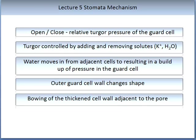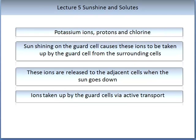Water moves in from adjacent cells, resulting in a build-up of pressure in the guard cell, causing a change of shape to the outer guard cell wall. The bowing of the thickened cell wall adjacent to the pore results in a change in structure. There are three solutes involved in active transport: potassium ions, protons, and chlorine. The protons are obtained from water. Sunlight shining on the guard cell causes ions to be taken up from surrounding cells, and these ions are released to adjacent cells when the sun goes down — assuming no other environmental input overrides this.